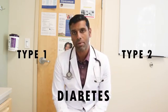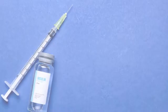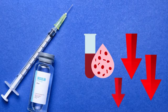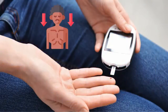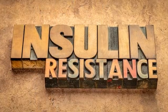When we think about diabetes, we always think about type 1 and type 2 diabetes. Type 1 diabetes is caused due to insulin deficiency or complete lack of insulin, whereas type 2 diabetes is due to insulin resistance.